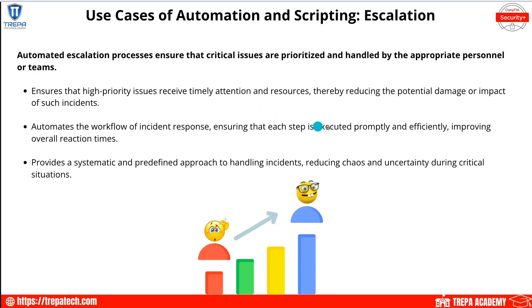Escalation: automated escalation processes ensure that critical issues are prioritized and handled by the appropriate personnel or teams, giving stakeholders an easier path to escalating issues. High-priority issues receive timely attention and resources. We can automate these workflows with runbooks or playbooks that execute depending on the issue being troubleshot.